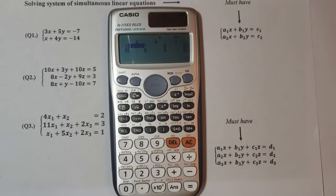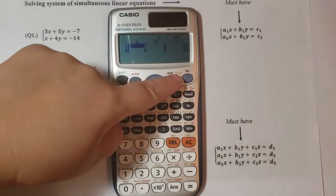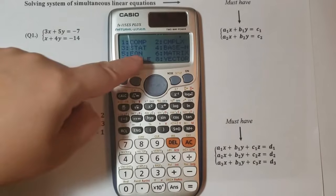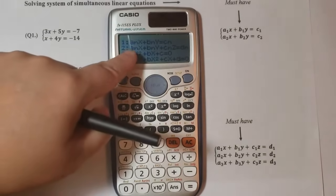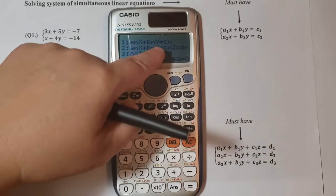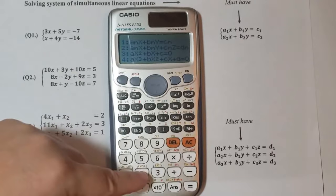On the calculator we go to the menu button, one, five for our equation solver. And since we have three unknowns we will choose the second option here with the three unknowns, three variables x, y and z by pressing 2.